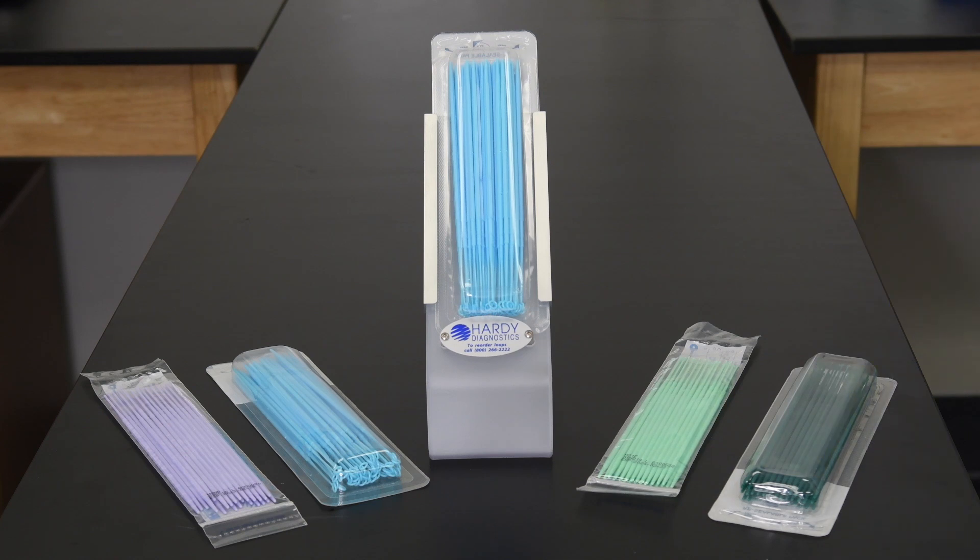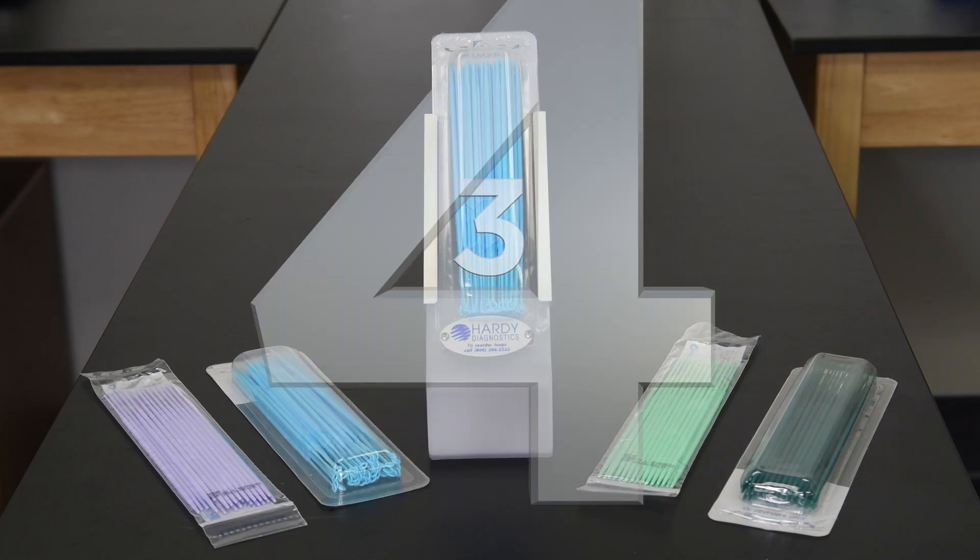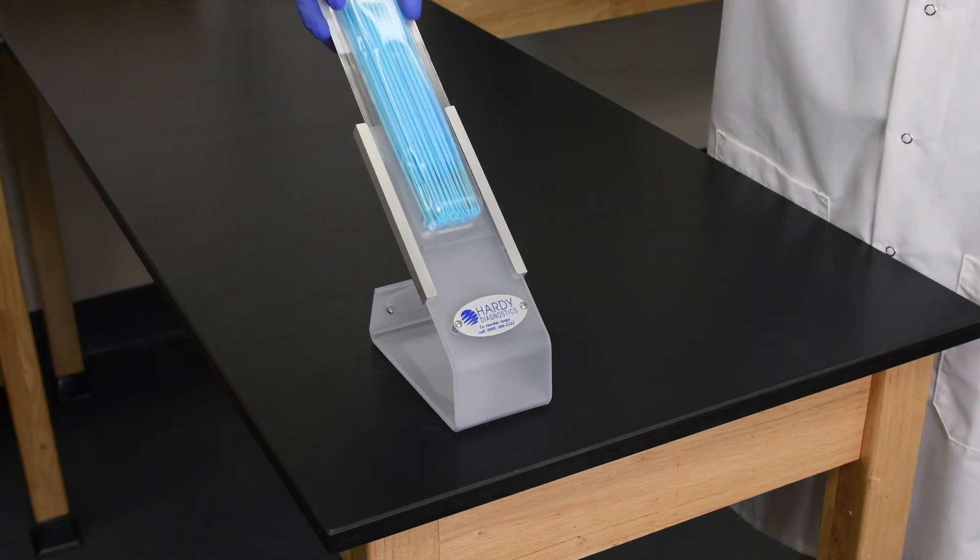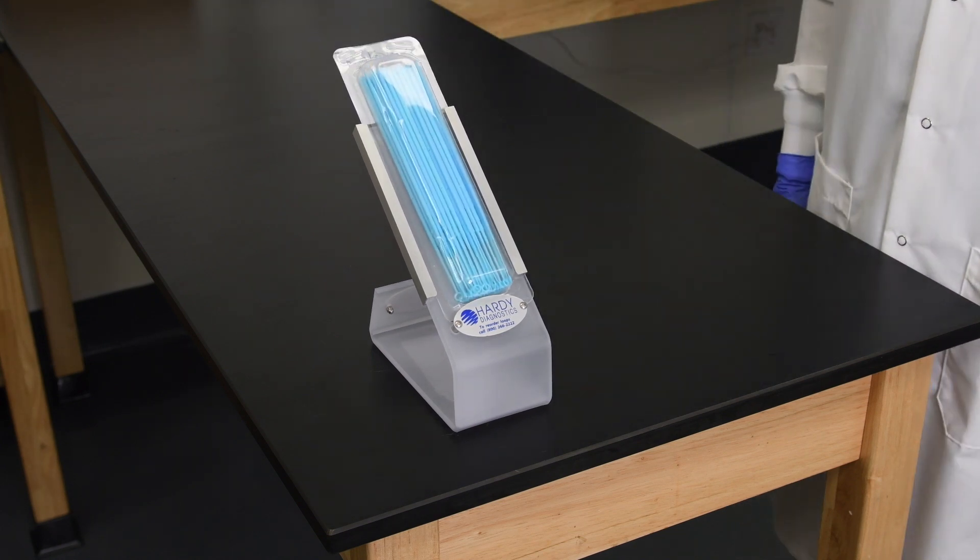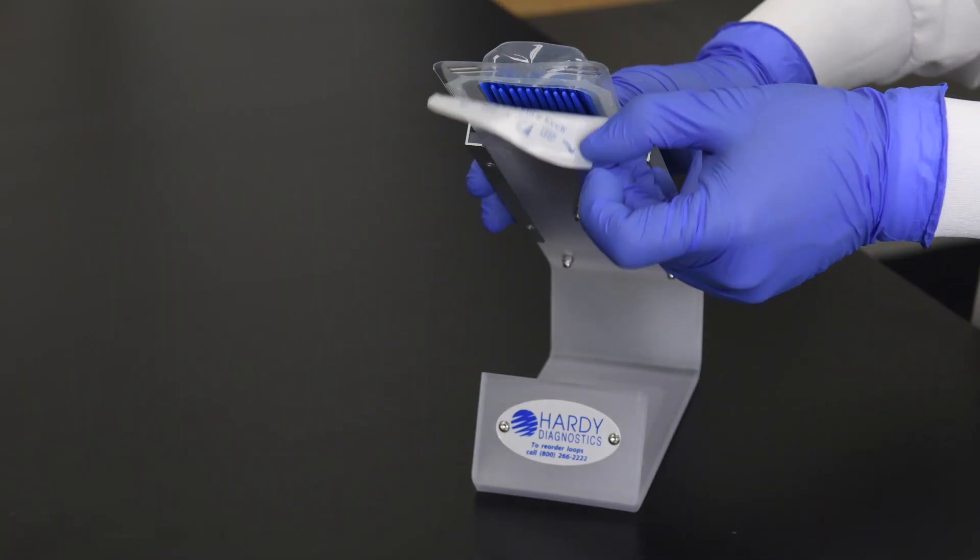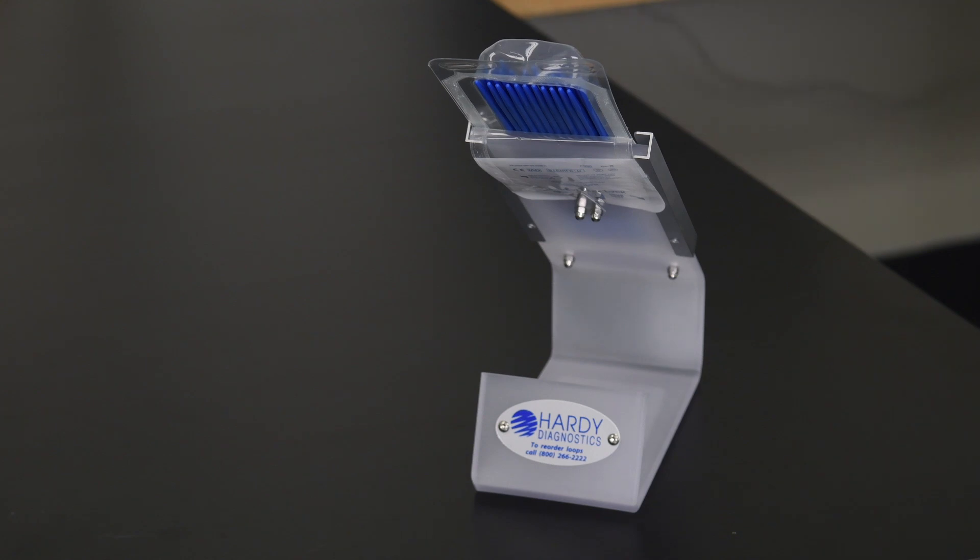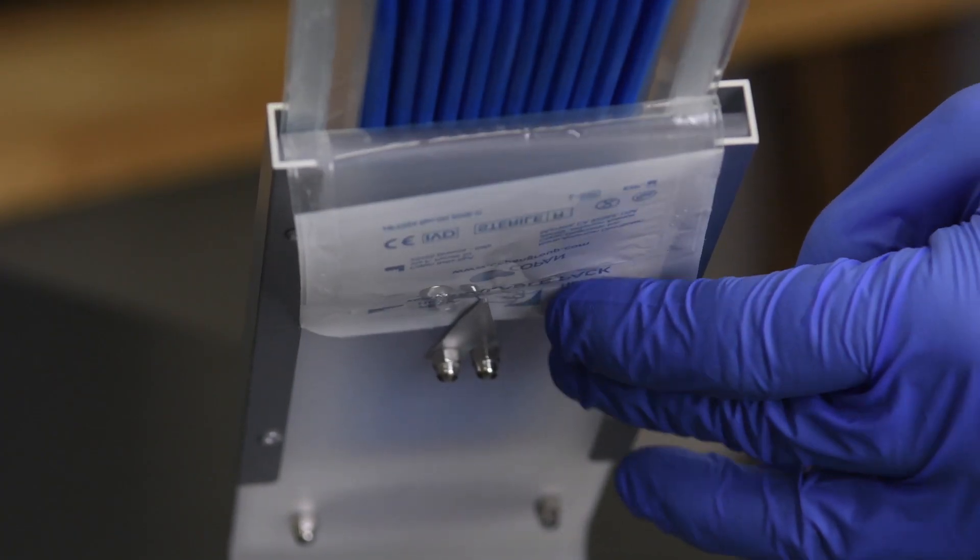Using the Loop Caddy is as simple as 1, 2, 3 and 4. First, slide the resealable loop pouch into the Loop Caddy so that the handles are at the top. Second, peel open the resealable tab on the top to expose the ends of the handles. Third, secure the tab into the clip.